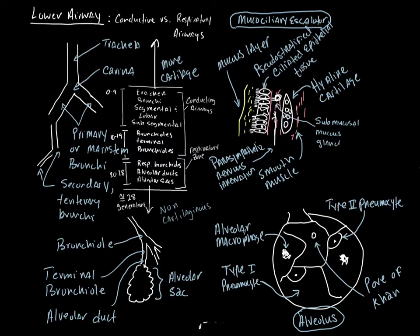The mucociliary escalator terminates more or less at the terminal bronchioles. In the alveoli, you also have alveolar macrophages — white blood cells that repair damage and clean out debris. A macrophage is a monocyte that has left the blood and entered tissue, becoming a tissue white blood cell. When monocytes do that, we call them macrophages.